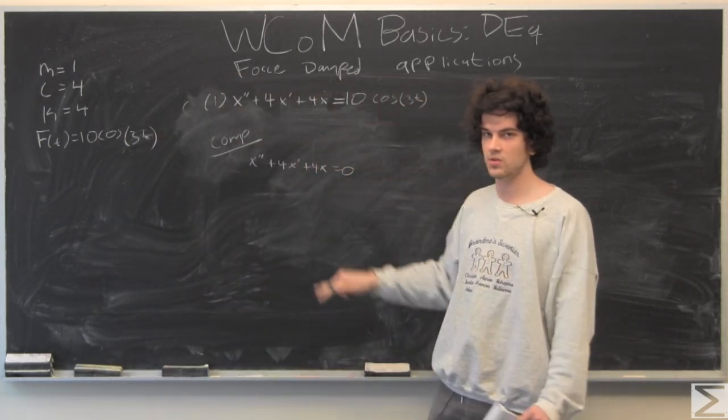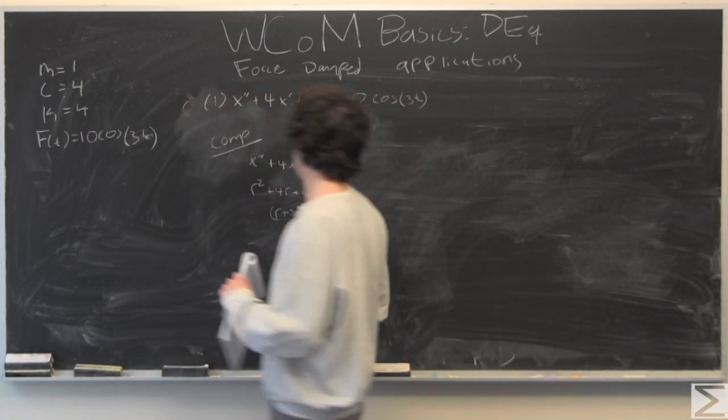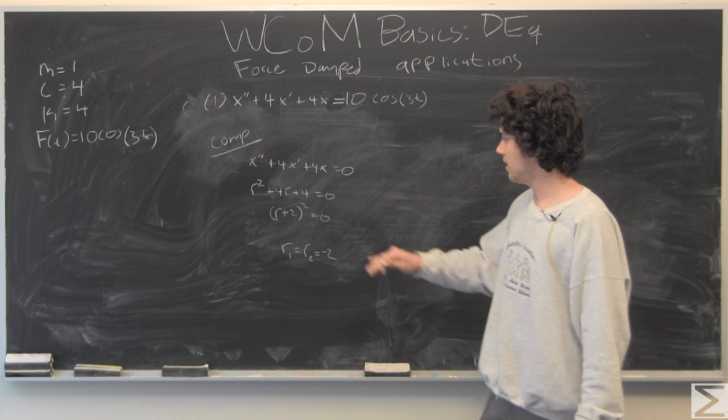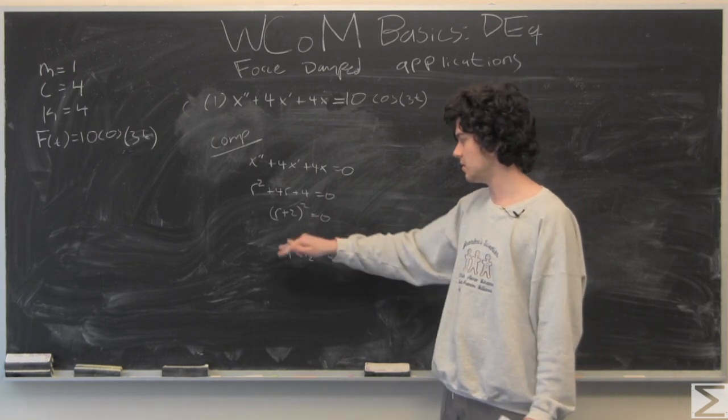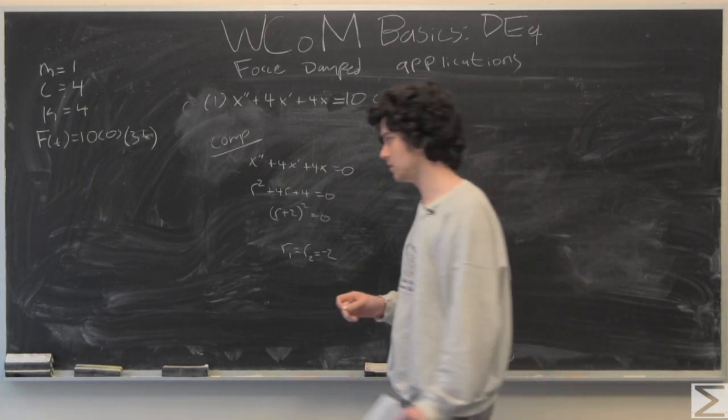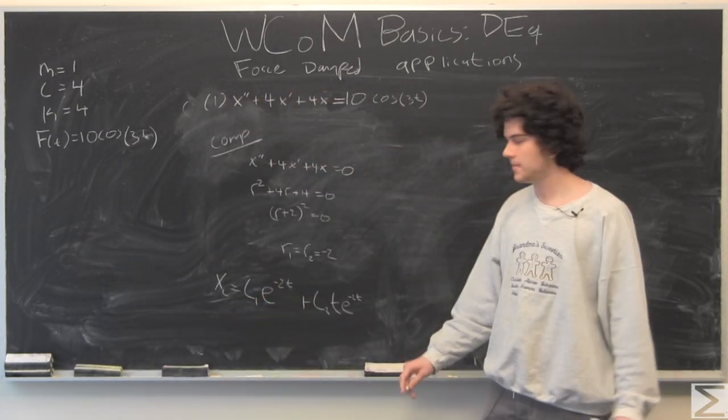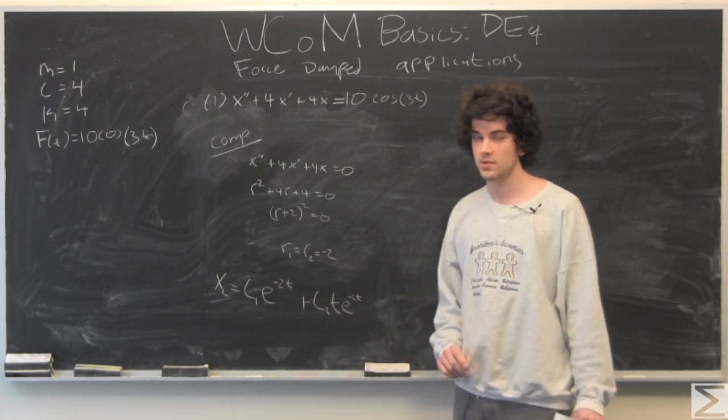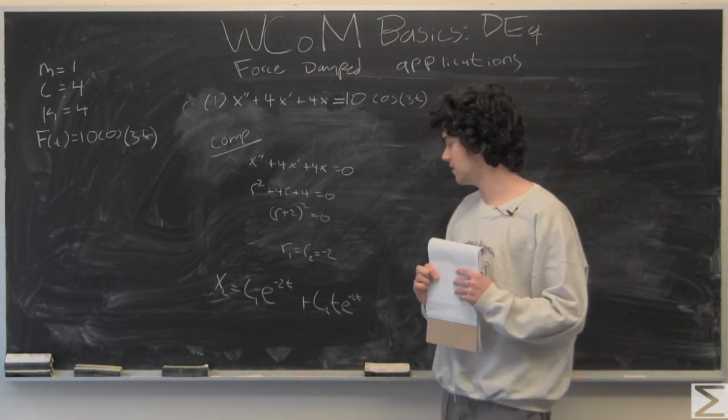And so going from this to our characteristic equation. Of course, since this is a critically damped case, we have our two roots equal, and our characteristic equation will give us roots equal to negative 2. So x sub c is equal to c1 e to the negative 2t plus c2 times t times e to the negative 2t. That's the straightforward part.